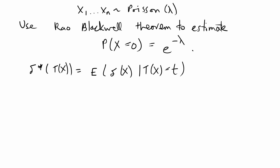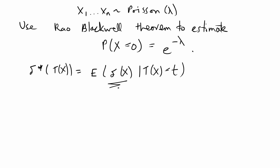The idea with Rao-Blackwell is you're going to take an estimate of whatever you're asked to find. We're asked to estimate e to the negative lambda, so we're going to plug in some estimator known as the original estimator. Sometimes you're given what estimator to plug in and it might be a really bad one, but through Rao-Blackwellization you're going to find a better estimator. You're also going to be conditioning on a sufficient statistic, so t(x) equal to t is some sufficient statistic.